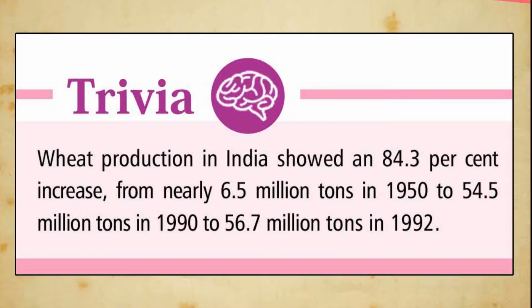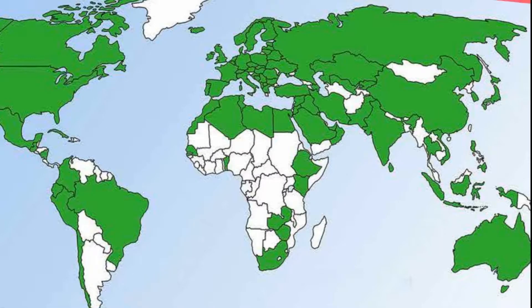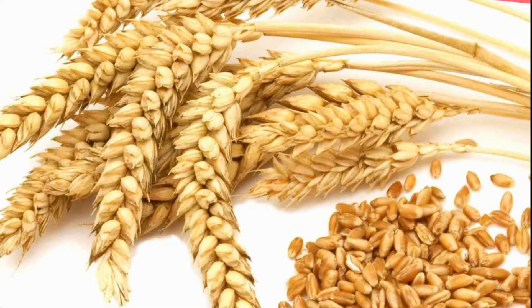Wheat production in India showed an 84.3% increase from nearly 6.5 million tonnes in 1950 to 54.5 million tonnes in 1990 and 56.7 million tonnes in 1992. China, India, USA, France, Canada, Russia, Turkey, Germany, Australia, etc. are the major producers of wheat.